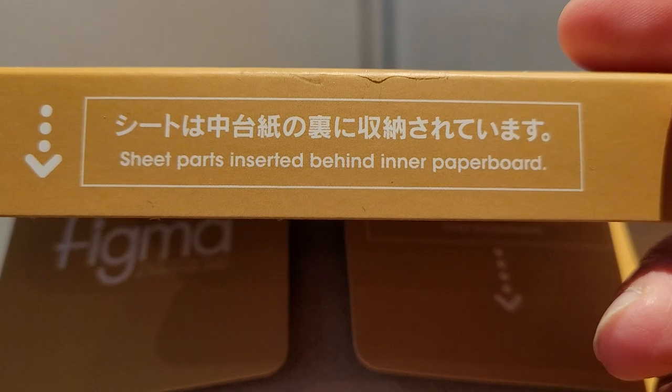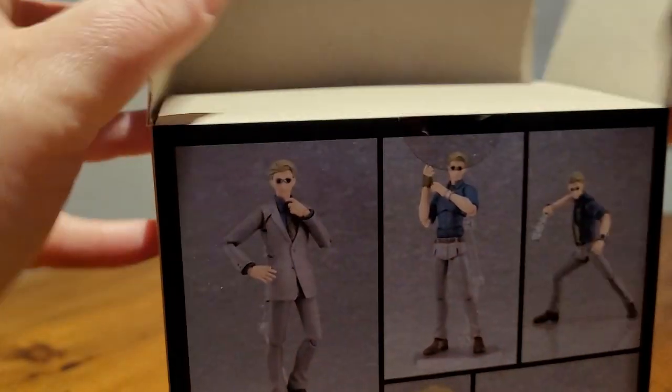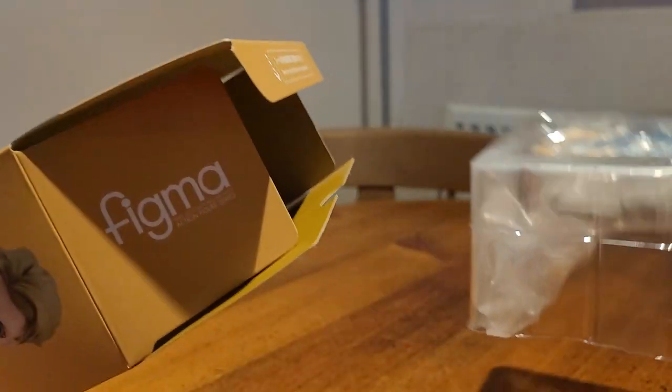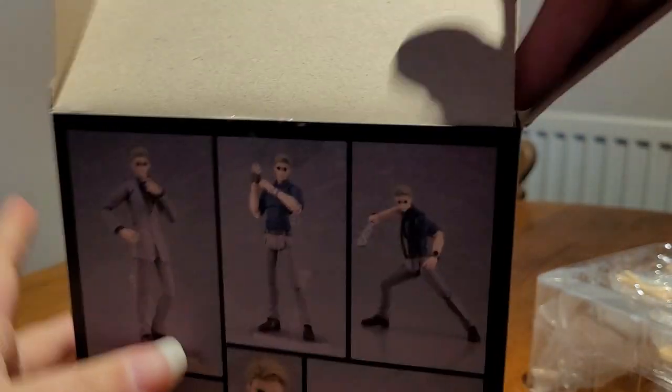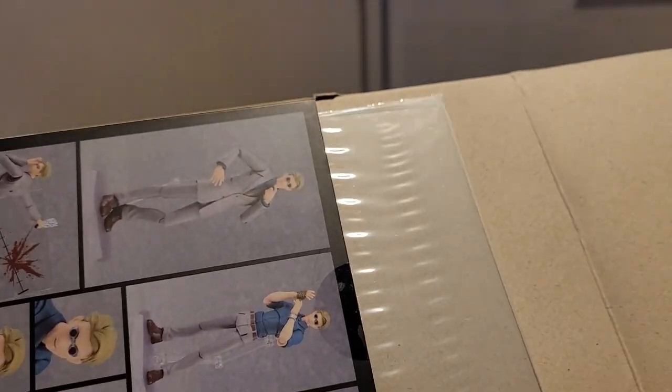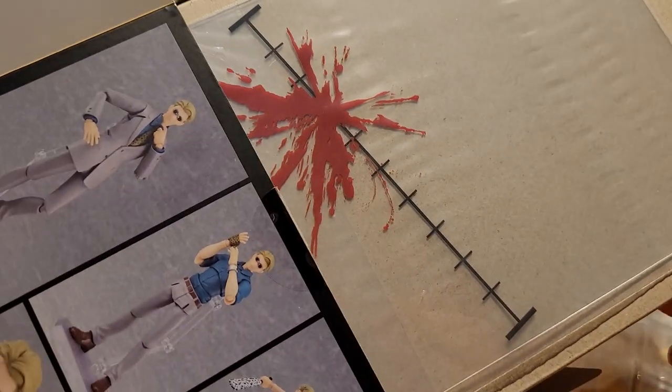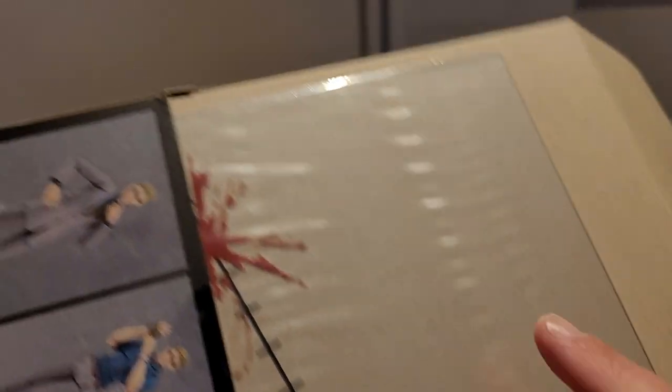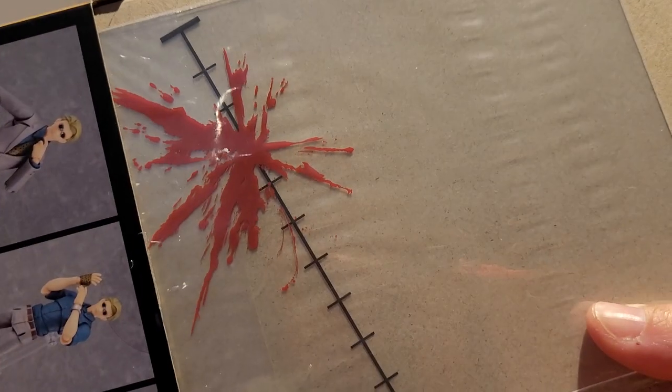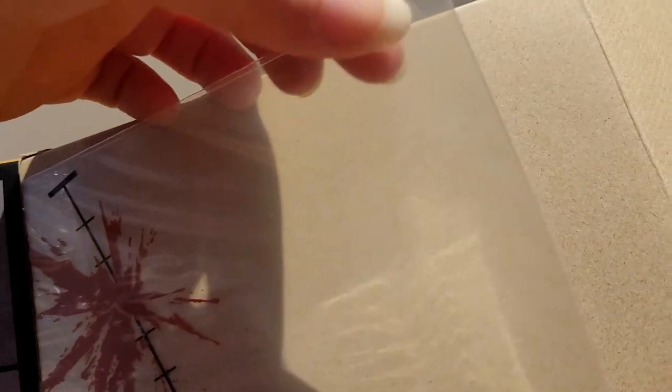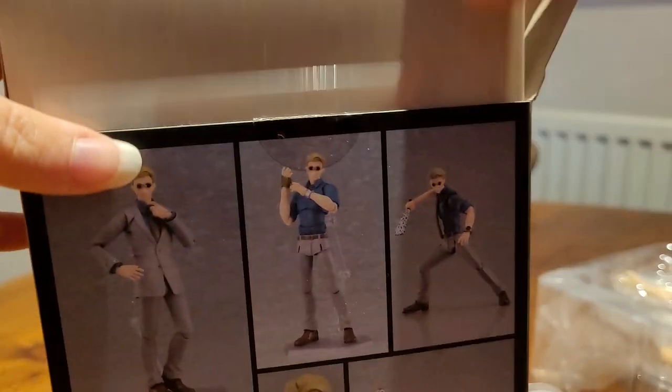As it says here on the lip, we've got sheet parts inserted behind the inner paper board. So if I take this out, it basically means if I take the cardboard out, we have Nanami's effect part, which is this. So it's like he's done a big slash with a blood stain. I'm not actually going to take this out of the box. This will remain in the box forever more unless I really want to get it out. Because it's on a very thin sheet of plastic. So this will bend very easily if you do not keep it flat. So that was that accessory part that is remaining in the box forever more.